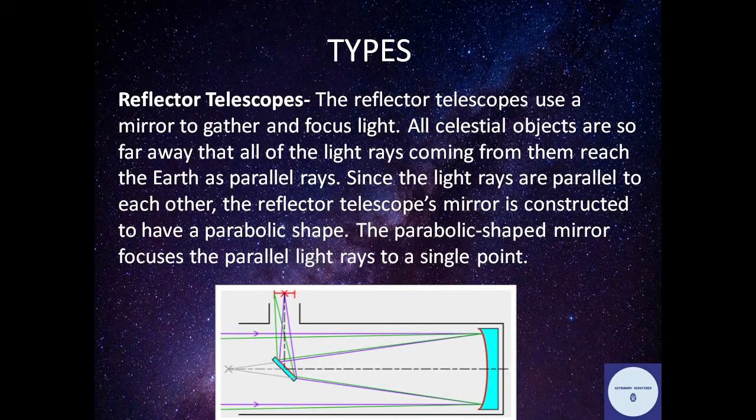Reflector telescopes use a mirror to gather and focus light. All celestial objects are so far away that all of the light rays coming from them reach the Earth as parallel rays.